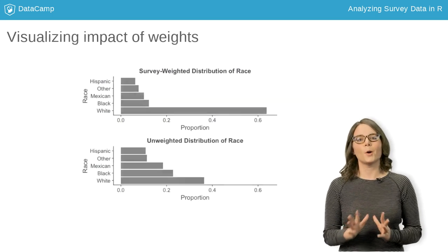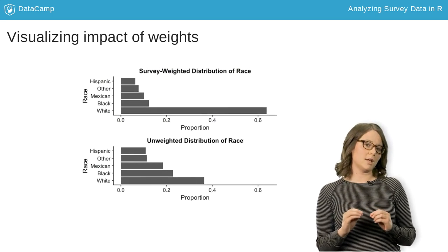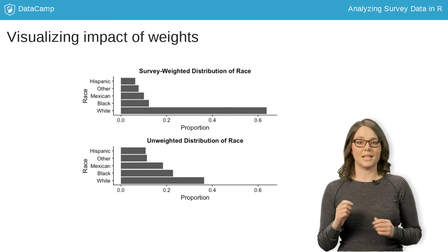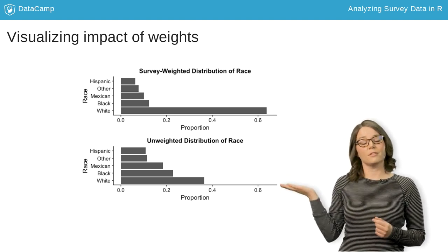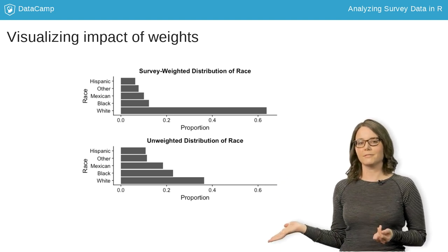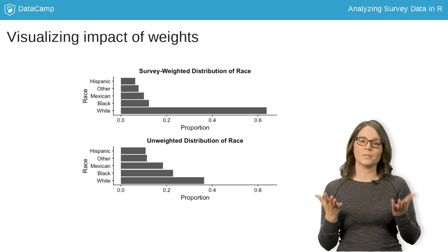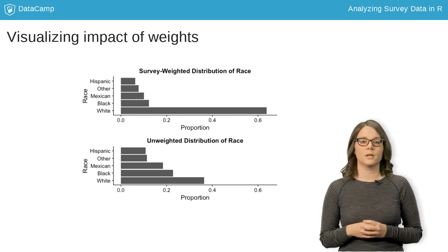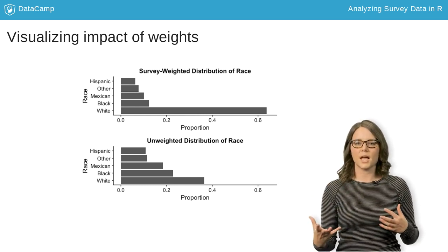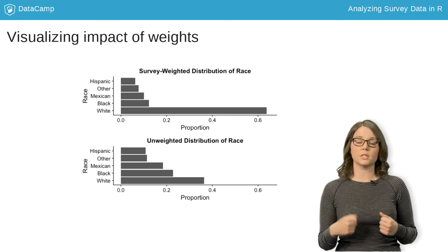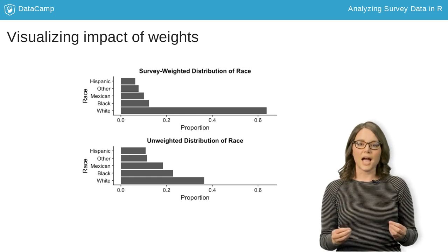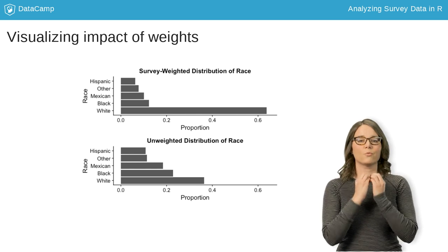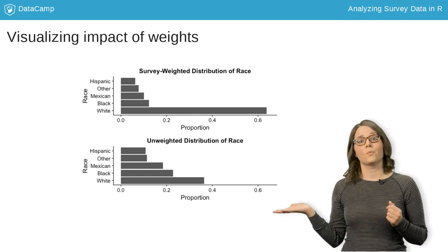Now for some analyses. Suppose we want to estimate the distribution of race in the US. I created these two plots using the race variable in the NHANES-RAW dataset. In the top graph, I accounted for the survey weights, and in the bottom graph, I didn't. Notice how different the distribution of race is between these two plots. The survey weights account for the sampling design, in which minority populations are oversampled, they adjust for non-response, and are calibrated to known information about the population. In essence, if we ignore them, we will get a very wrong graph.